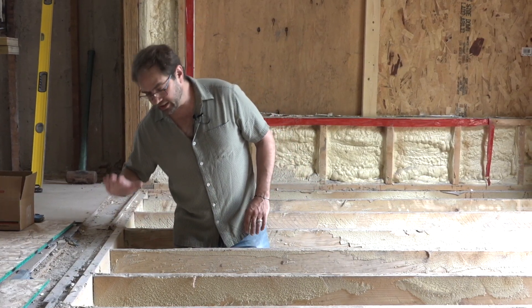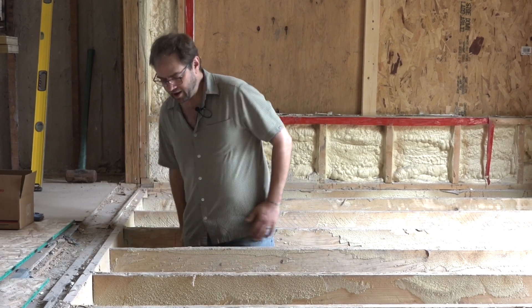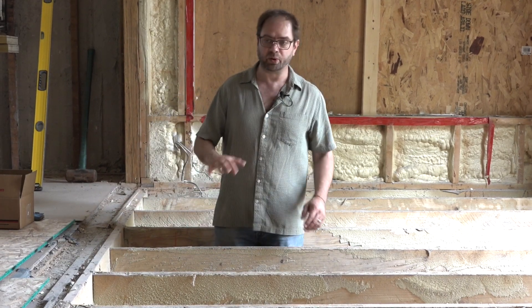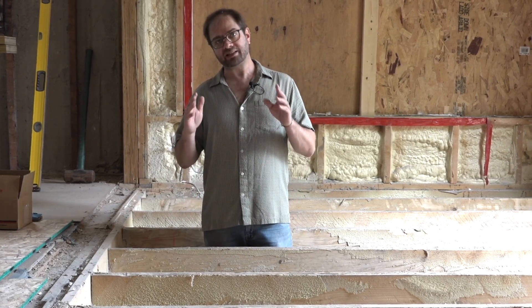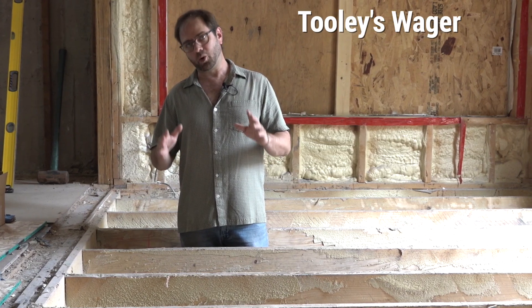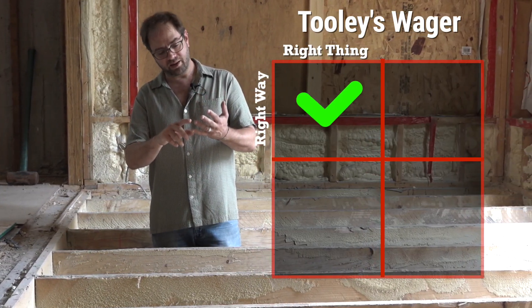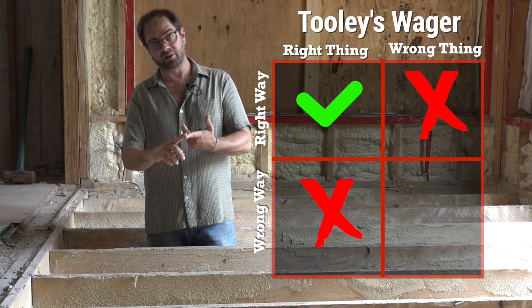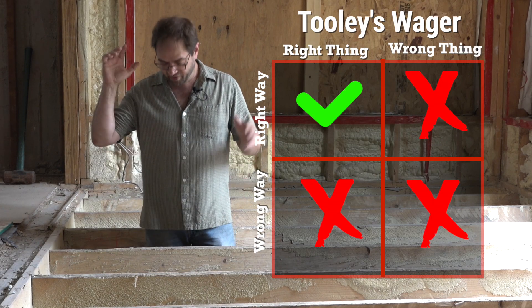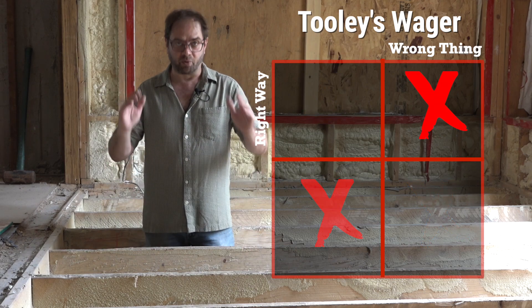This is an addition that was put on by another builder. They attached it to the outside of the house and built it with the best of intentions, but it's a classic example of — to quote John Tooley — you can do the right thing the right way, the right thing the wrong way, the wrong thing the right way, and the wrong thing the wrong way, but only one of them is right. And this would be an example of doing the wrong thing the right way.